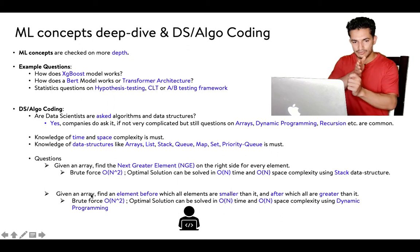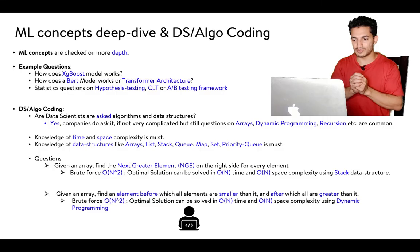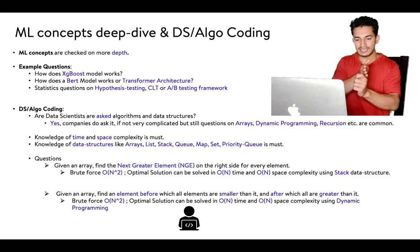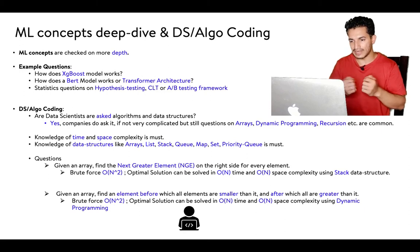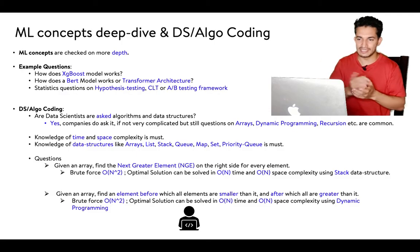Another sample question: given an array, find an element before which all elements are smaller and after which all elements are greater. A brute-force search for every index gives O(n²), but an optimal solution uses dynamic programming — for every index, store the maximum on the left side and the minimum on the right side, then check if the maximum on the left is less than the element and the minimum on the right is greater. This gives O(n) time and O(n) space complexity.